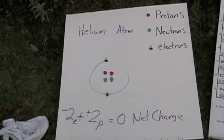Please notice that the charges is negative 2e plus positive 2p equals a 0 net charge. The reason we have 2 electrons is because we have atomic number 2, and the number of protons and electrons is equal for atoms on the periodic table.